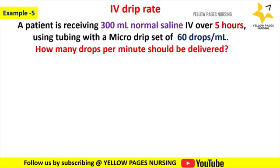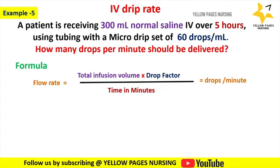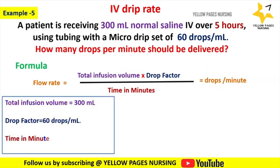The formula to calculate flow rate is: total infusion volume multiplied by drop factor, divided by time in minutes, which gives drops per minute. Here, total infusion volume is 300 ml, drop factor is 60 drops per ml, and time in minutes will be 5 multiplied by 60.